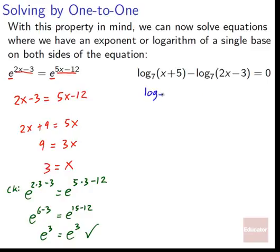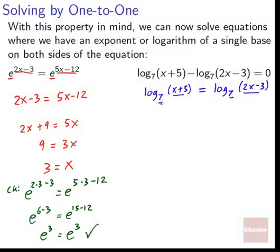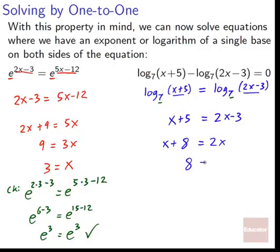Same basic idea with log base 7 of x plus 5 equals log base 7 of 2x minus 3. Since both sides are log base 7, by the one-to-one property the arguments must be equal: x plus 5 equals 2x minus 3. Add 3 to both sides to get x plus 8 equals 2x, then subtract x to get 8 equals x. There's our answer, and we could check it the same way.